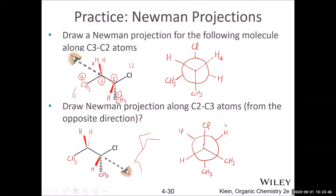Another way to think about this: take the first Newman structure and rotate 180 degrees clockwise — whatever was in the back moves to the front, and those in the front move to the back. With that 3D transformation, you get the Newman projection from the opposite direction. So, that covers Newman projections.